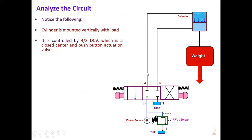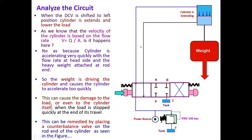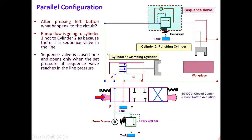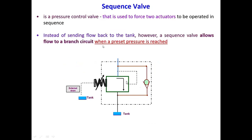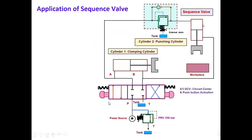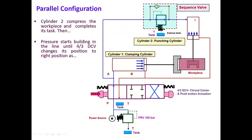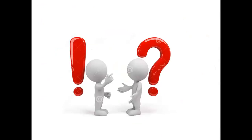In this figure we have seen the counterbalance valve circuit. In this way we have studied: the pressure reducing valve — its symbol, the difference between sensing pressure from upstream versus downstream — and then the sequence valve, its symbol, application of the sequence valve, parallel configuration of the sequence valve circuit, and circuit analysis. Any doubts or queries, please ask. Thank you.